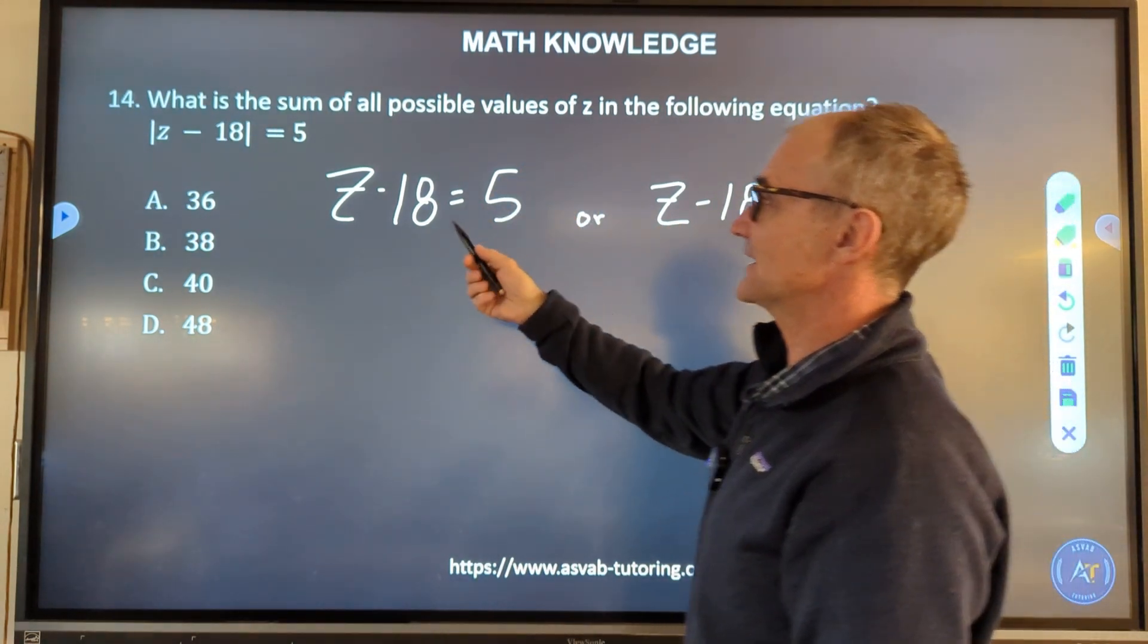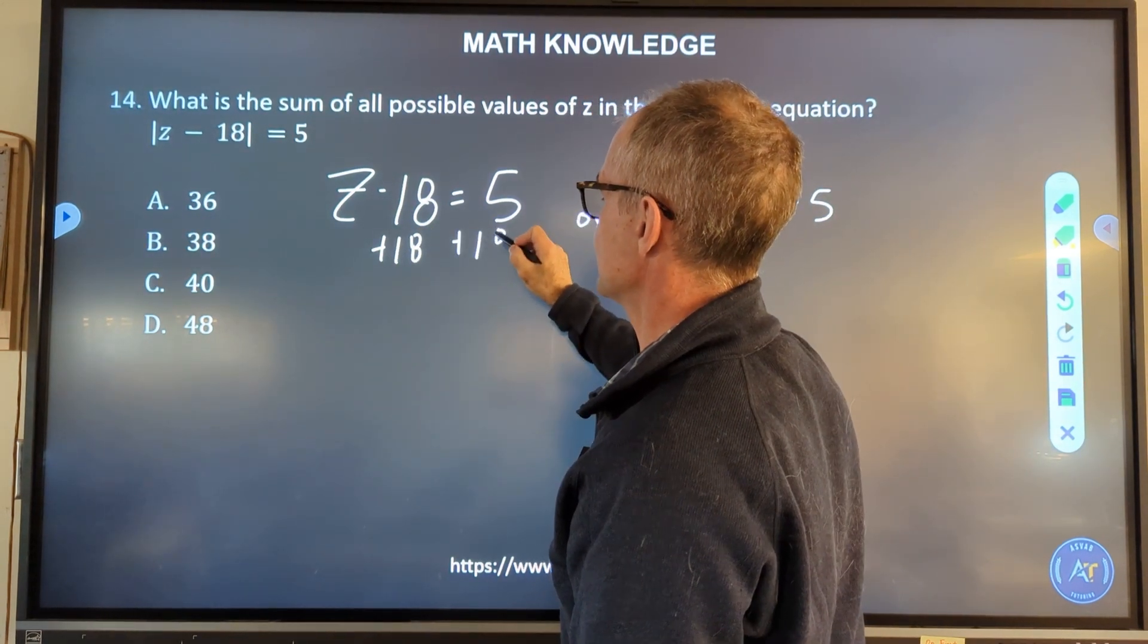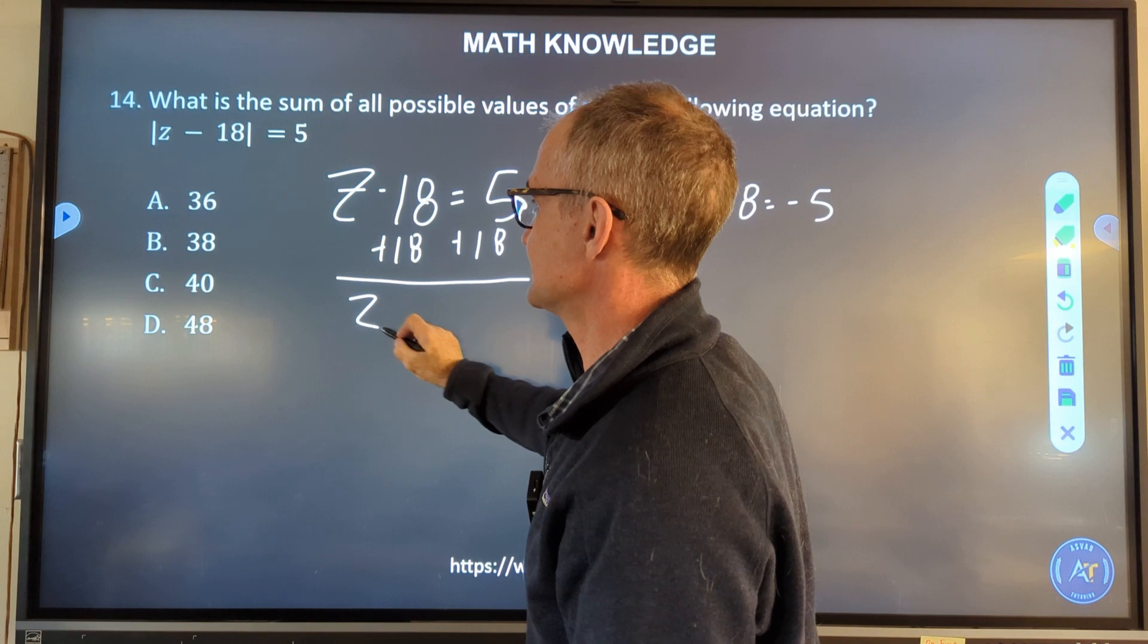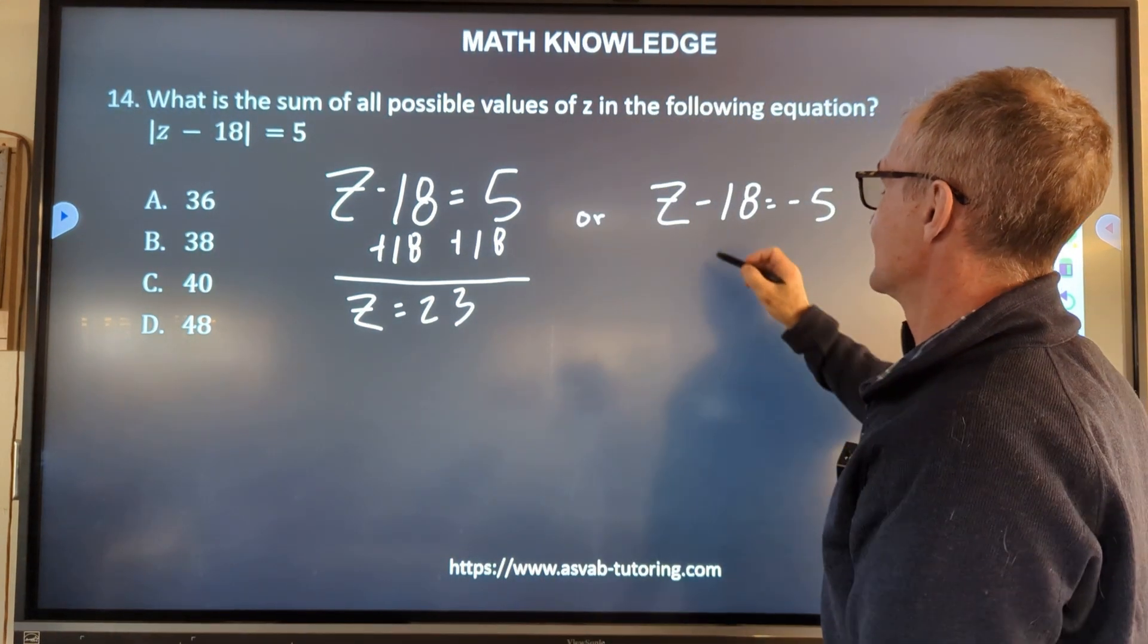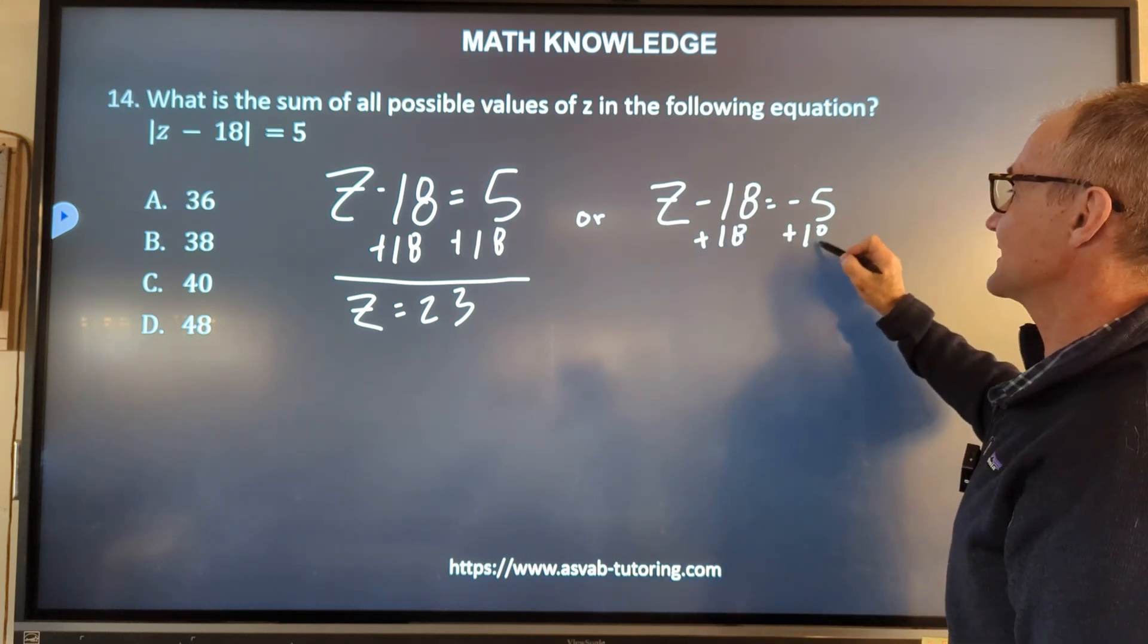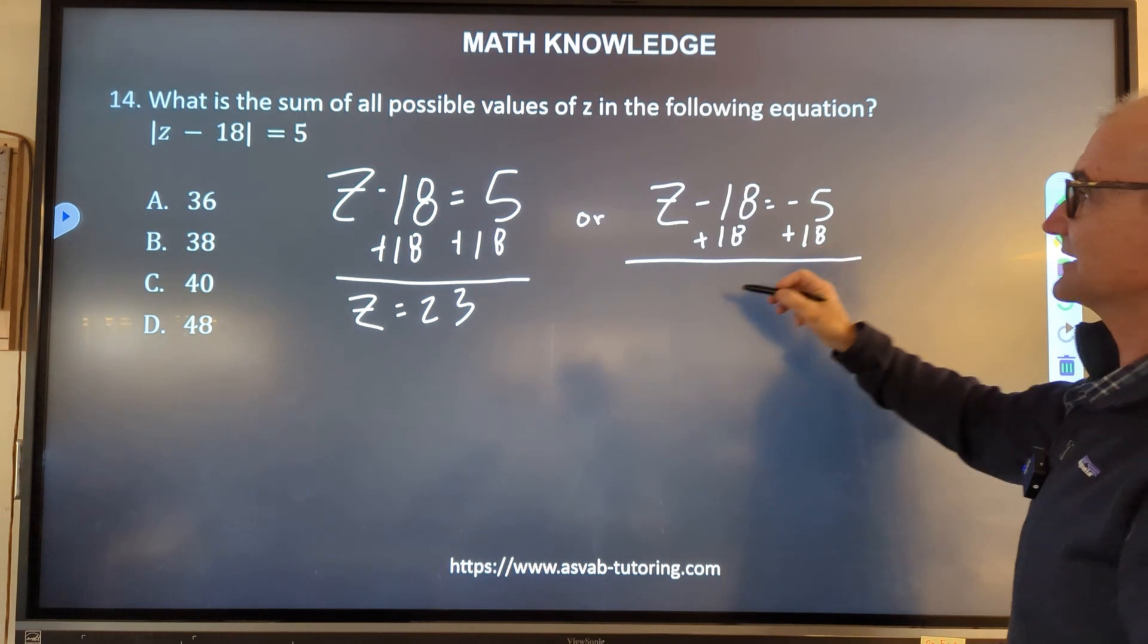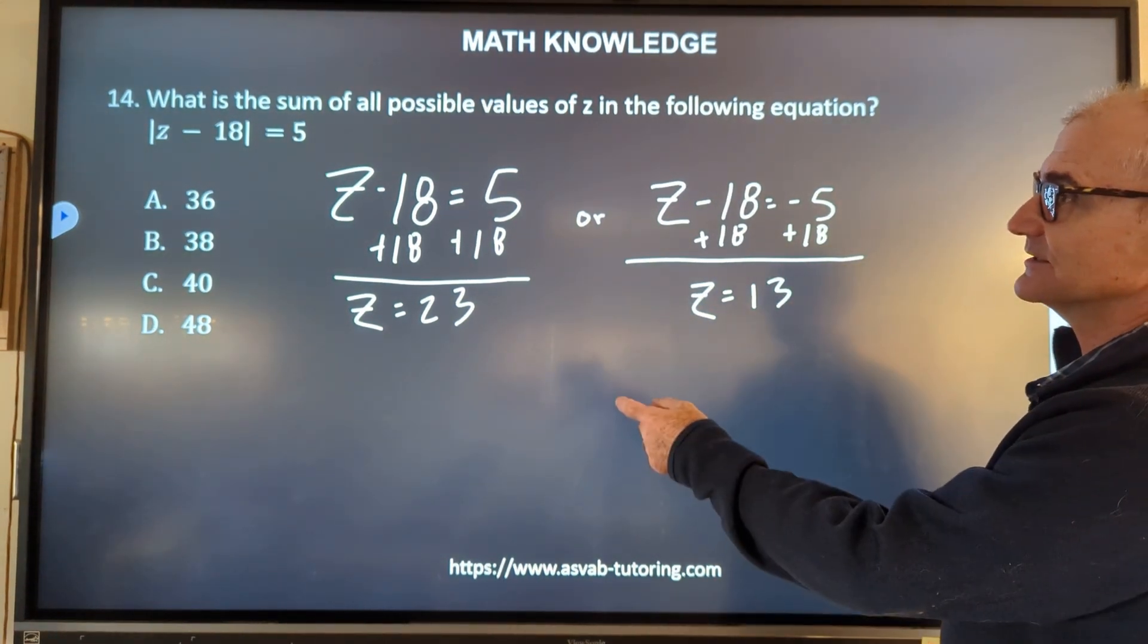Then I have two equations to solve. I add 18 to both sides. Adding 18 and 5 gives me 23, so z equals 23. That's a possible answer. Or I add 18 here to both sides. -5 plus 18, z equals 13. So there are two solutions, 13 and 23.